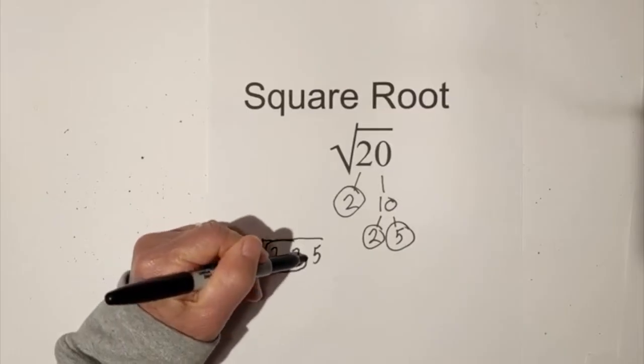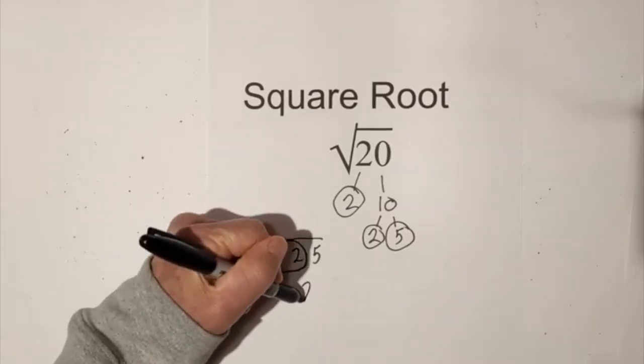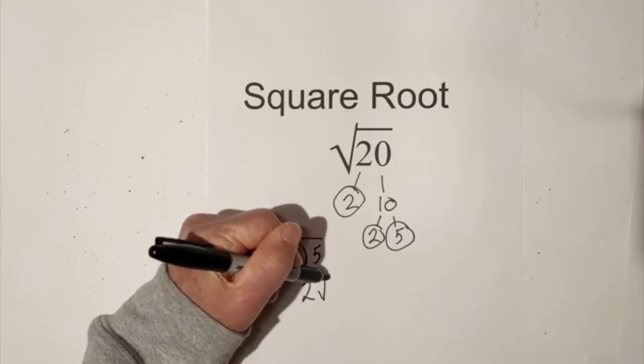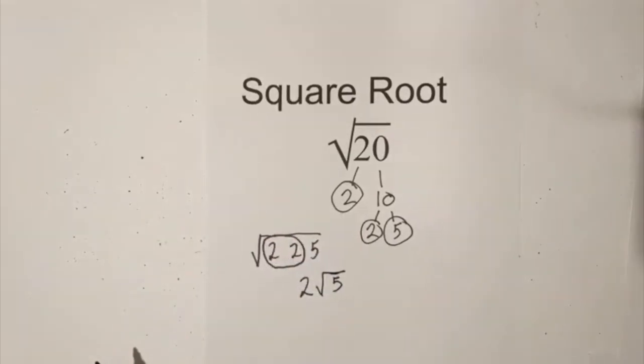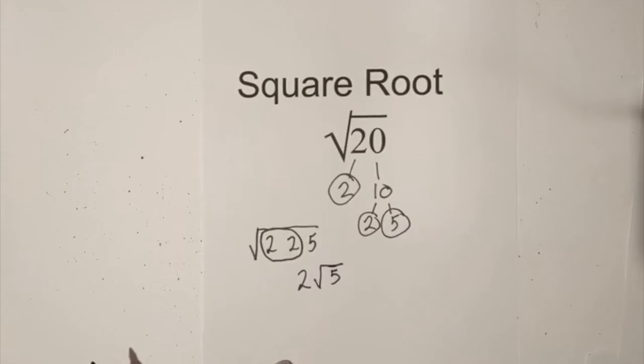So I can remove the pair of 2's and 5 remains under the radical sign. So the exact square root of 20 is 2 square root of 5.